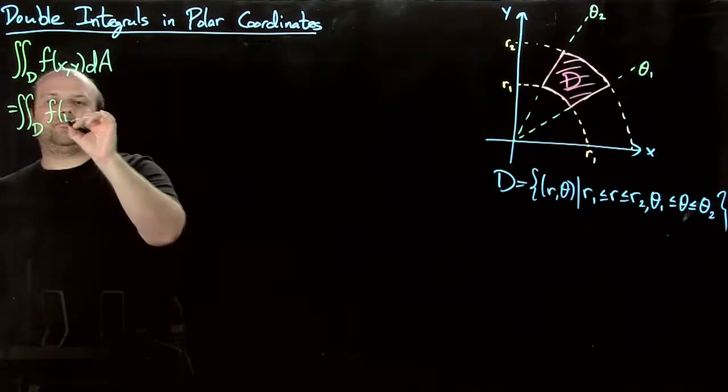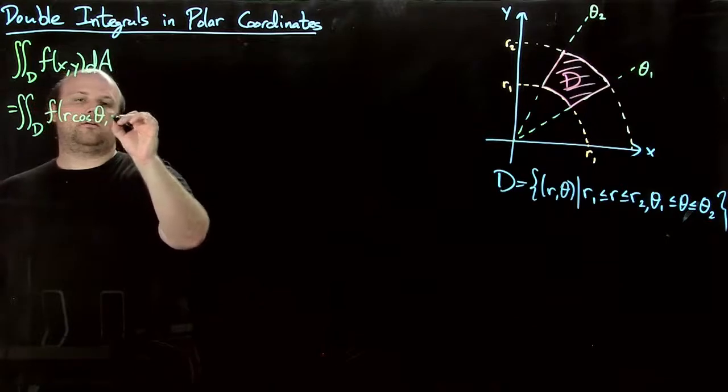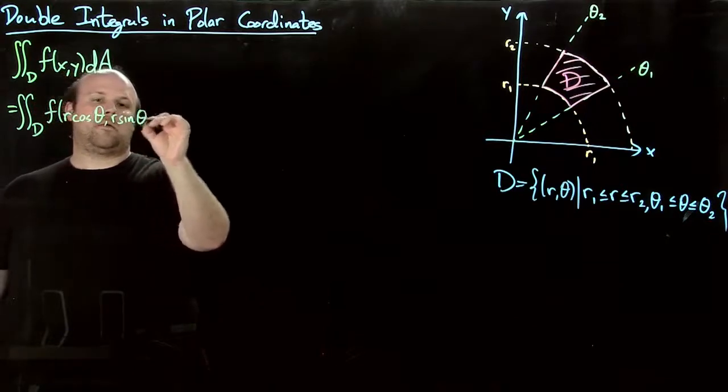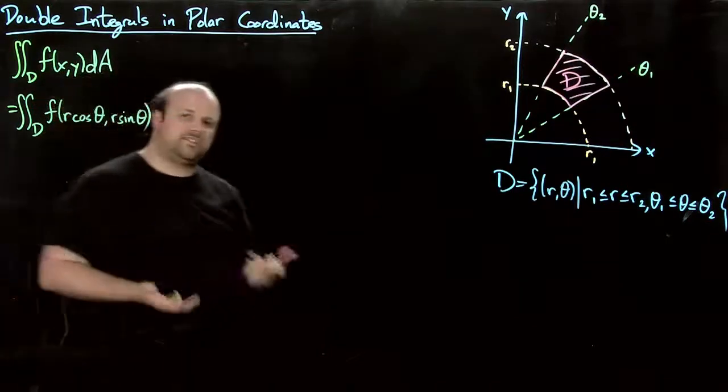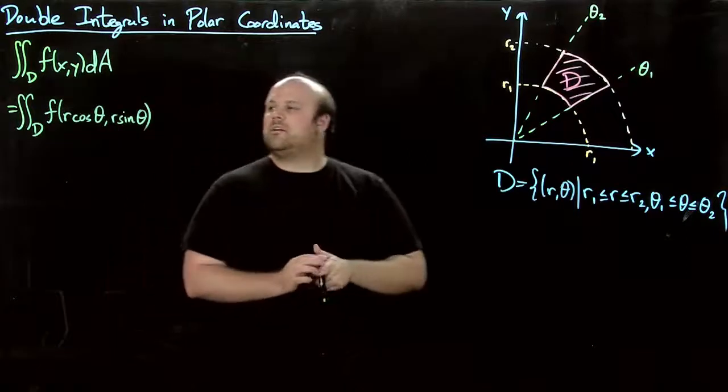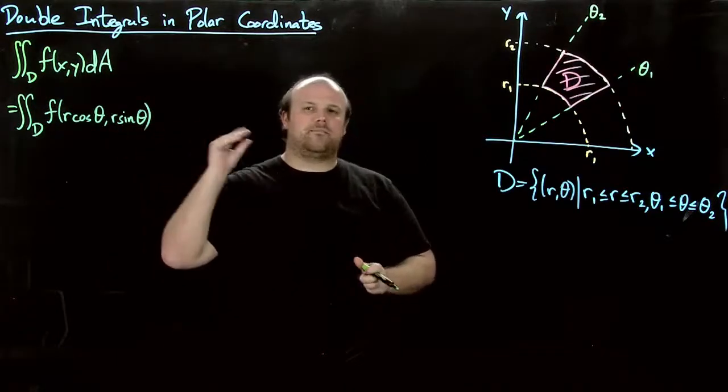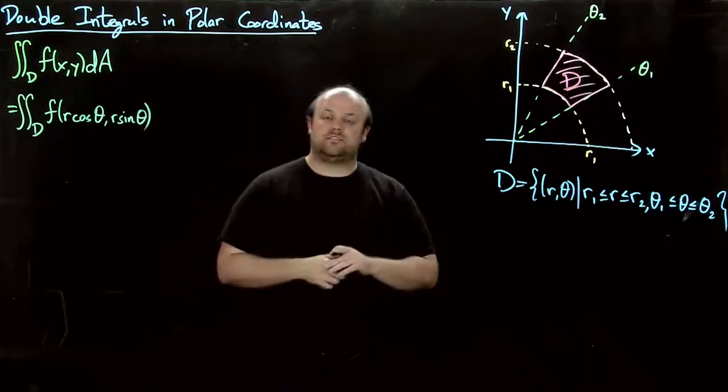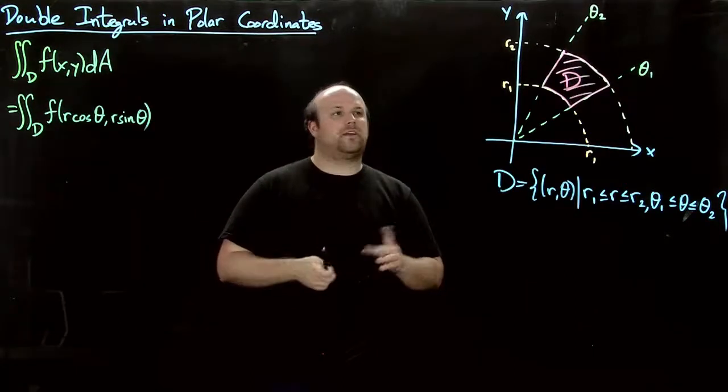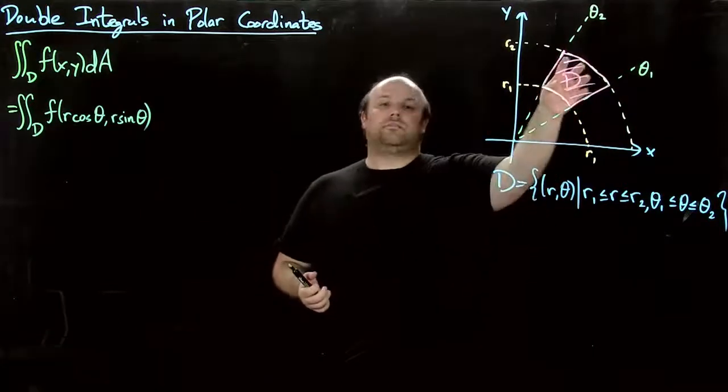So if we're going to start describing this in polar coordinates, r cosine theta, r sine theta, remember dA was dx dy or dy dx. What does that become when we go to polar? Well, let's figure that out.